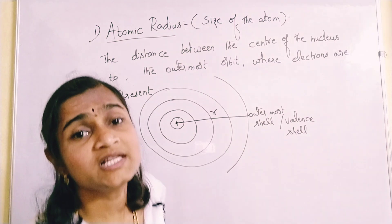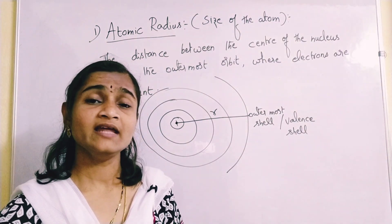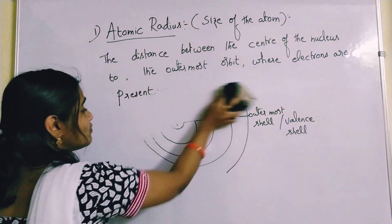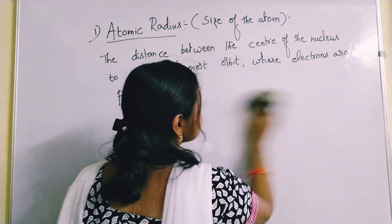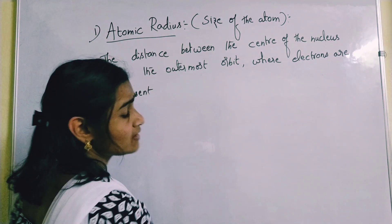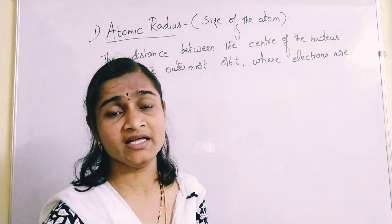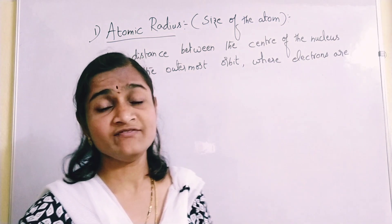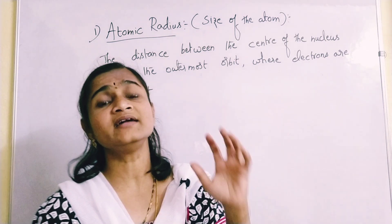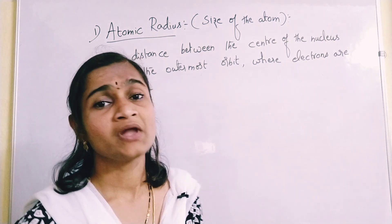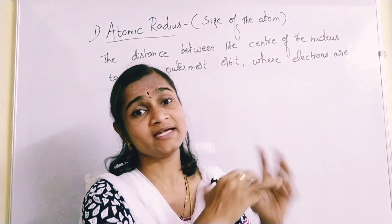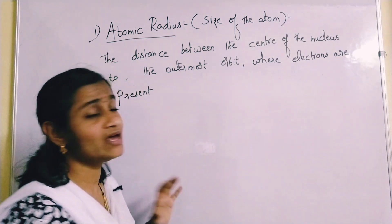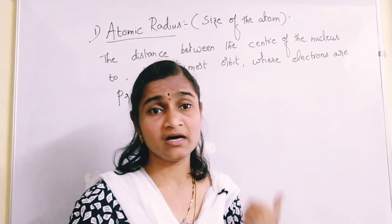Actually, atomic radius can be studied in different ways — like van der Waals radius, metallic radius, covalent radius, and so on. But those different types of radii are not given in your TS SSC physical science textbook, so we are not going to discuss those types of radii in this context.